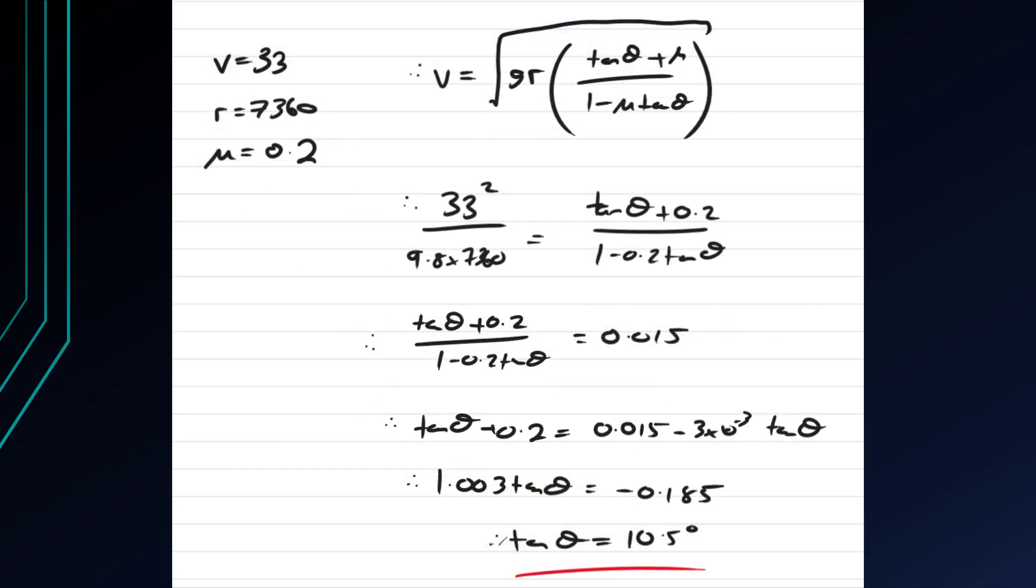Now the second bit involves the slightly more complex looking formula. So we get if we square both sides first we get v squared over g or so 33 squared over 9.8 times 7360,